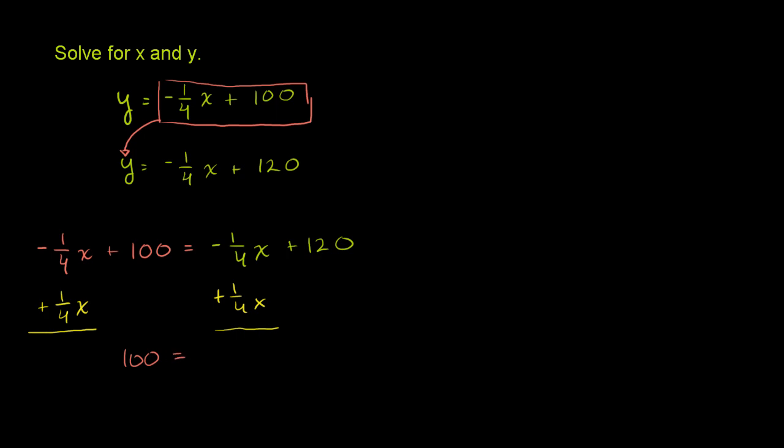And then the right side of the equation, same thing. Negative 1/4 x plus 1/4 x, they cancel out. No x's, and you're just left with is equal to 120, which we know is definitely not the case. 100 is not equal to 120.